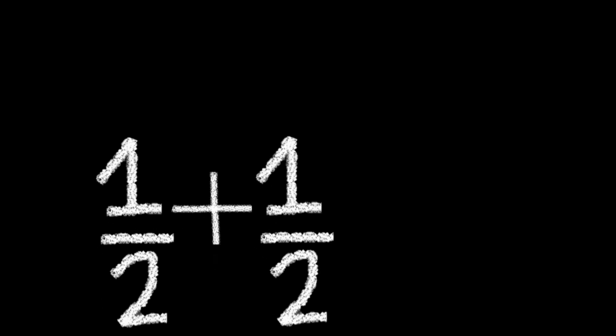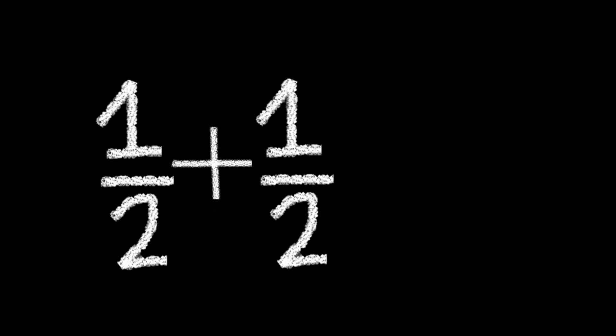Let's start with a pretty straightforward fraction problem: half plus half. Since the denominators are the same, we simply have to add the two numerators together. 1 plus 1 is 2, so we would get 2 over 2. And of course, since both the denominator and numerator are the same, 2 over 2 would be equal to 1.